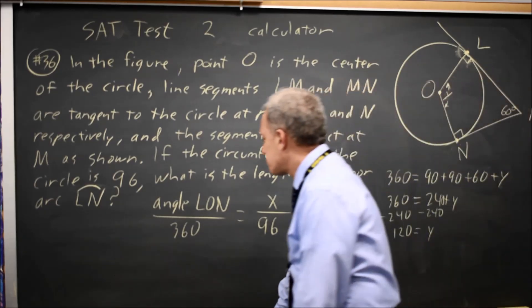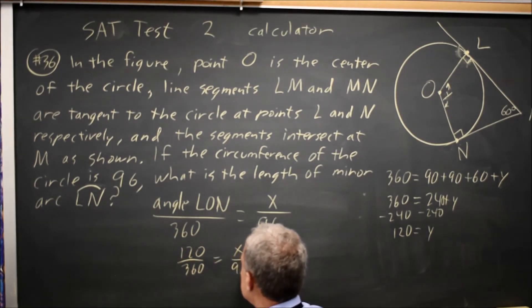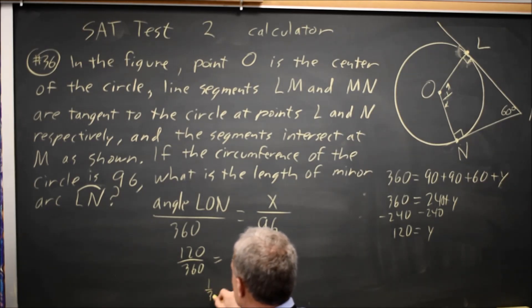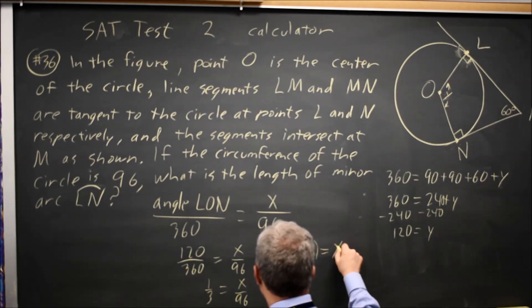So that gives us over here, 120 over 360 equals X over 96. 120 over 360 is one-third. If I multiply both sides by 96, I get 96 times one-third equals X.